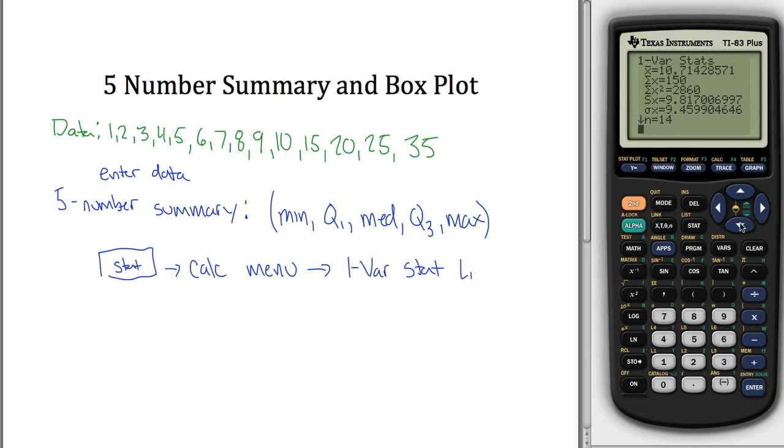Anyways, hit enter, and a bunch of stuff will come out, things that maybe you've seen before. But if you scroll down, it gives you five values. It tells us that our minimum was equal to 1. That's good. That was our minimum value. Maybe I should go in order.